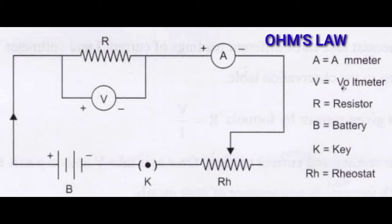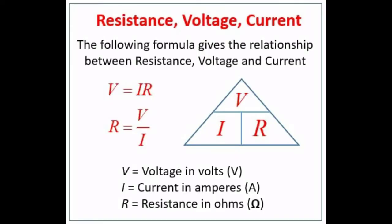Ohm's Law. A German physicist George Simon Ohm established the relation between the potential difference and current, which is known as Ohm's Law. According to Ohm's Law, at a constant temperature, the steady current I flowing through a conductor is directly proportional to the potential difference V between the two ends of the conductor. I is directly proportional to V. Hence, I/V = constant. The value of this proportionality constant is found to be 1/R. Therefore, I = (1/R)V, and therefore V = IR.